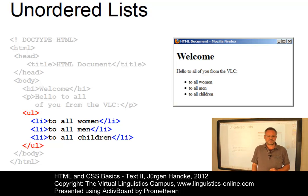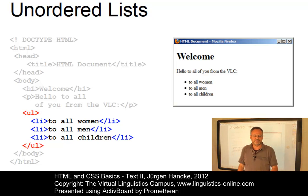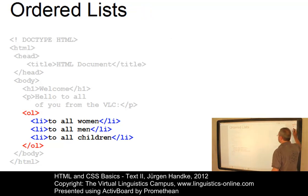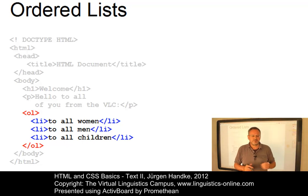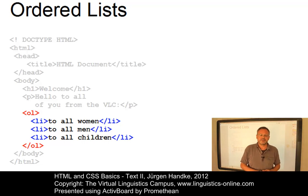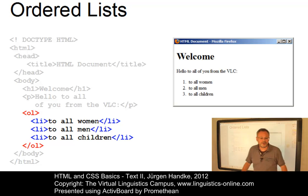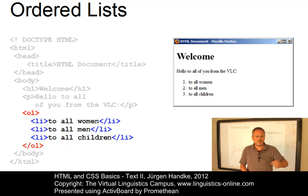Ordered lists should be used when the sequence of the list item is important. In HTML, ordered lists are defined using the OL tags — OL for ordered lists. List items are again displayed between the LI tag. As a result, the list is ordered in terms of numbers in ascending order by default — in our case, from 1 to 3.